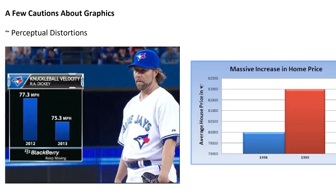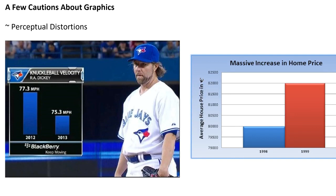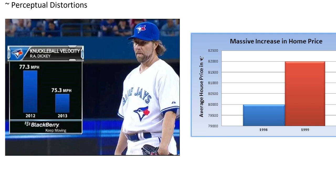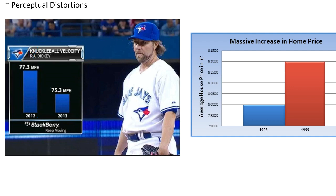Next, a few cautions about graphics. First, perceptual distortions — things that trick your mind into thinking numbers are different than they actually are. In this first image, one graph looks about twice as big as the other, making it seem like the knuckleball pitch speed was twice as high as in 2013. But looking at the numbers, 75.3 is not half of 77.3 — it's only a two mile per hour difference.